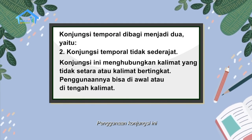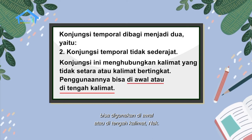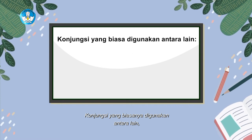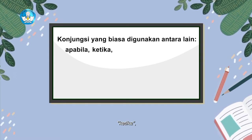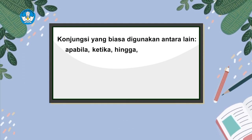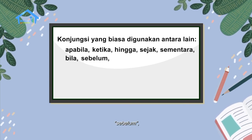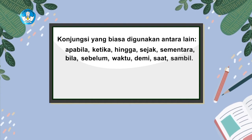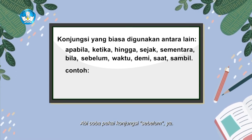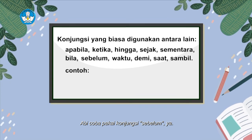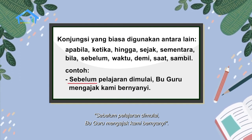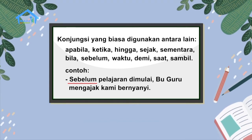Konjungsi temporal tidak sederajat adalah konjungsi yang menghubungkan kalimat tidak setara atau kalimat bertingkat. Penggunaan konjungsi ini bisa digunakan di awal atau di tengah kalimat. Contohnya, konjungsi yang biasanya digunakan antara lain: apabila, ketika, hingga, sejak, sementara, bila, sebelum, waktu, demi, saat, dan sambil. Contoh menggunakan konjungsi 'sebelum': Sebelum pelajaran dimulai, Bu Guru mengajak kami bernyanyi. Sudah paham?